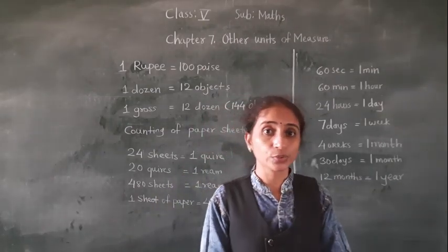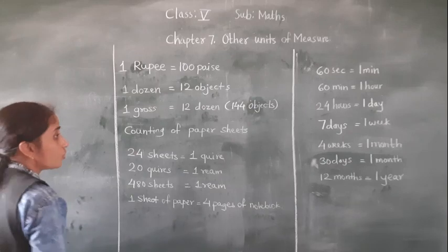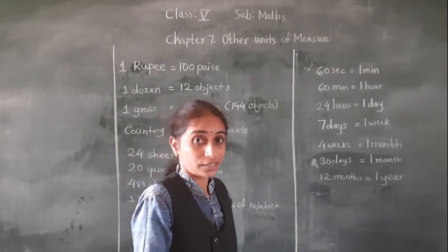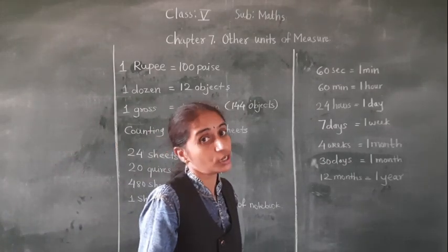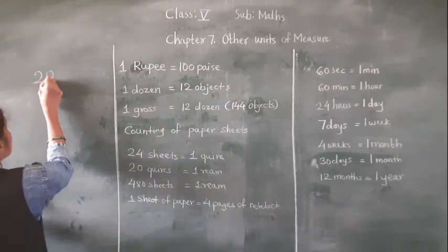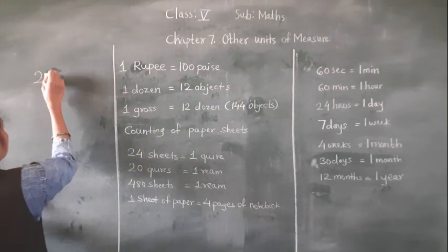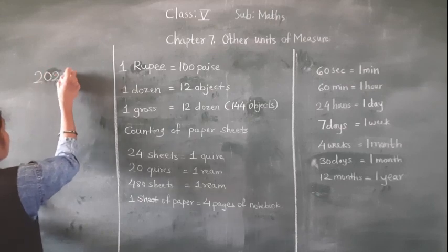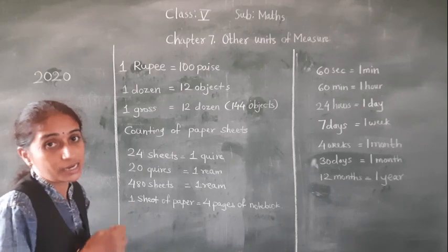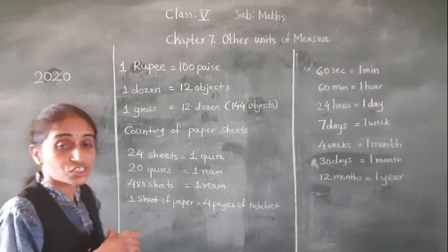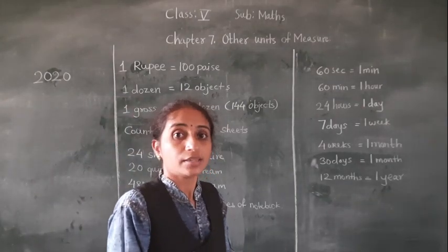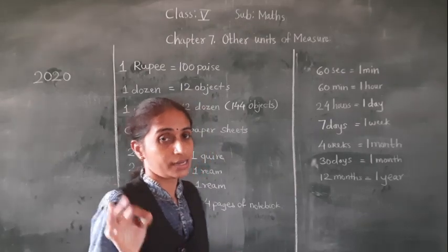Now I am going to explain the leap year. Which year is going on? 2020. For 2020, it should be divisible by 4. That year is called a leap year. The year which we can divide by 4 is called a leap year.